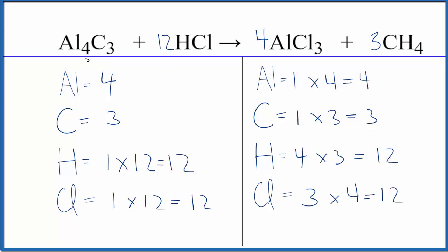This is the balanced equation for Al4C3 plus HCl. If you wanted to know the states, they would look like this. This is Dr. B with the balanced equation for aluminum carbide plus hydrochloric acid. Thanks for watching.